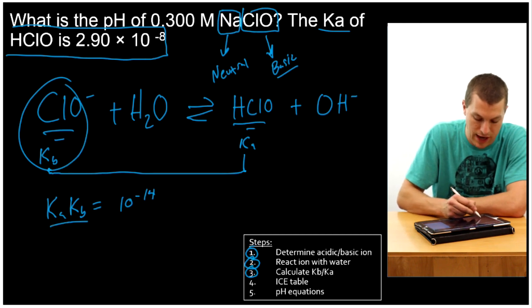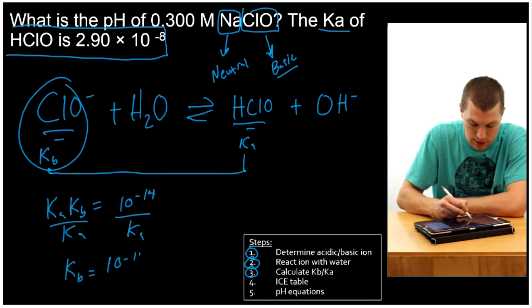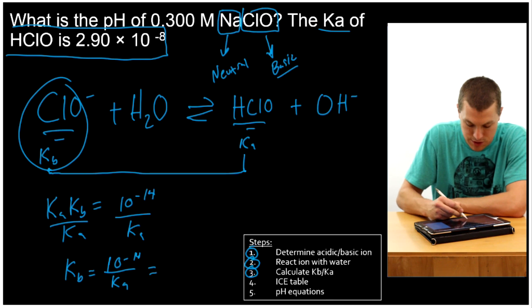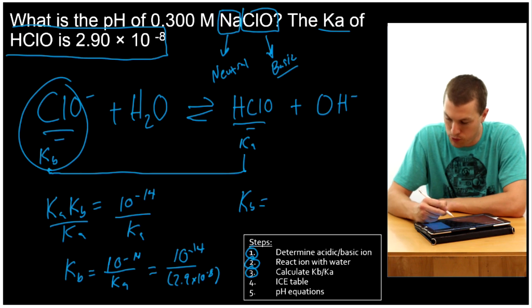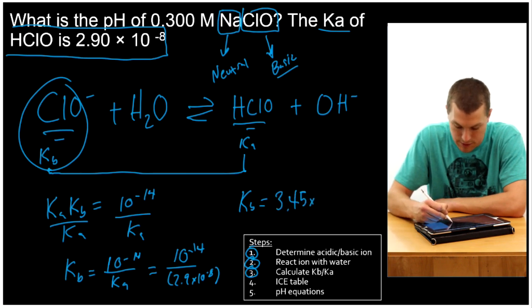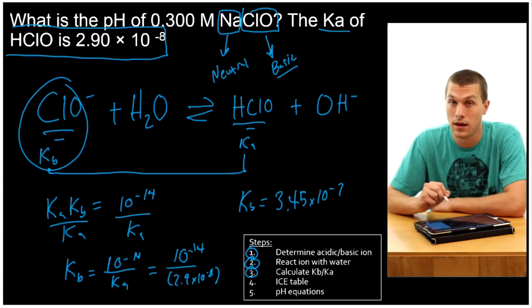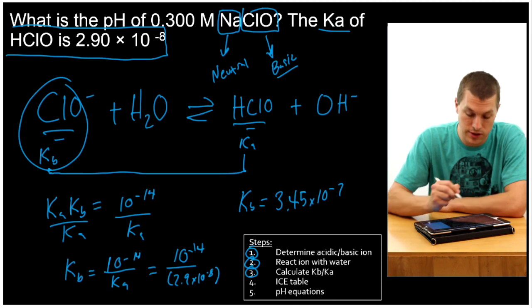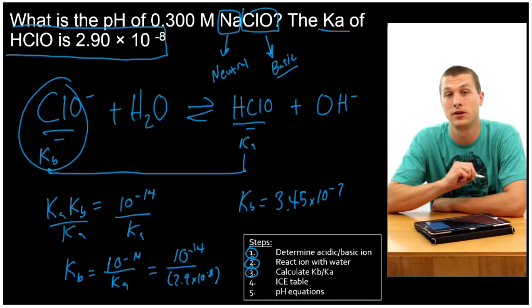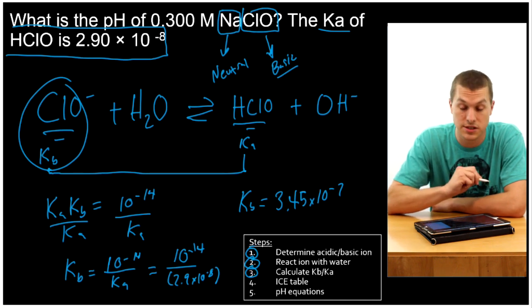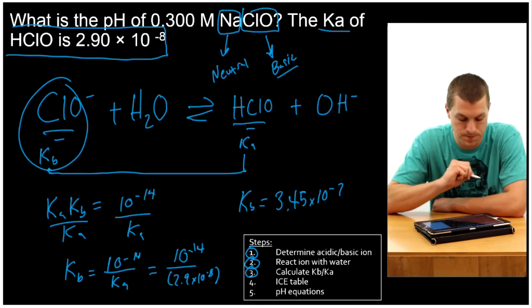All we have to do is rearrange to solve for Kb for our ClO-. And so we're going to divide both sides by Ka. We're going to get that Kb is equal to 10 to the minus 14 divided by Ka, which is equal to 10 to the minus 14 divided by 2.9 times 10 to the minus 8. So that gives us ultimately a Kb of 3.45 times 10 to the minus 7. Now, you only need to do this process when you're given a Ka and you need the Kb. So in this case, we were given the Ka of HClO. That's not the compound in our reaction. So we got to go to the Kb, which is for our conjugate base, ClO-.